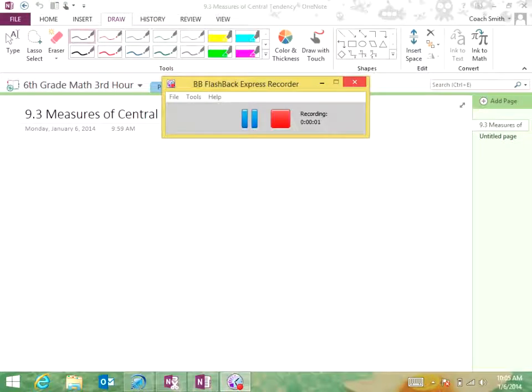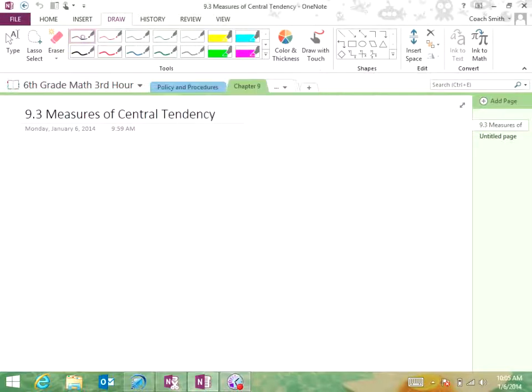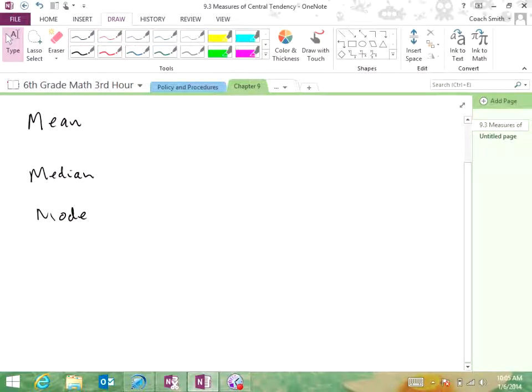Measures of central tendency is a fancy set of words that basically describe this. Measures of central tendency is the mean, median, mode, and some people will include the next one - some books don't, some people say it is a measure of central tendency, some folks don't - but it is the range.